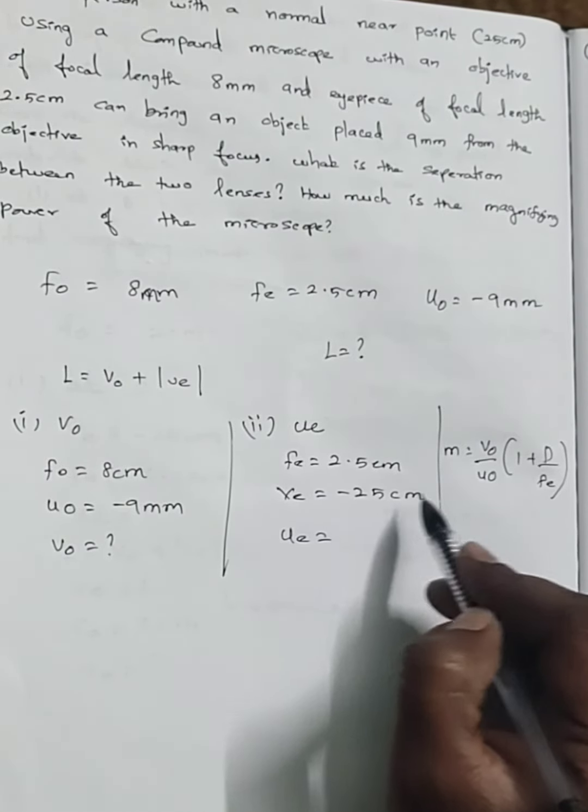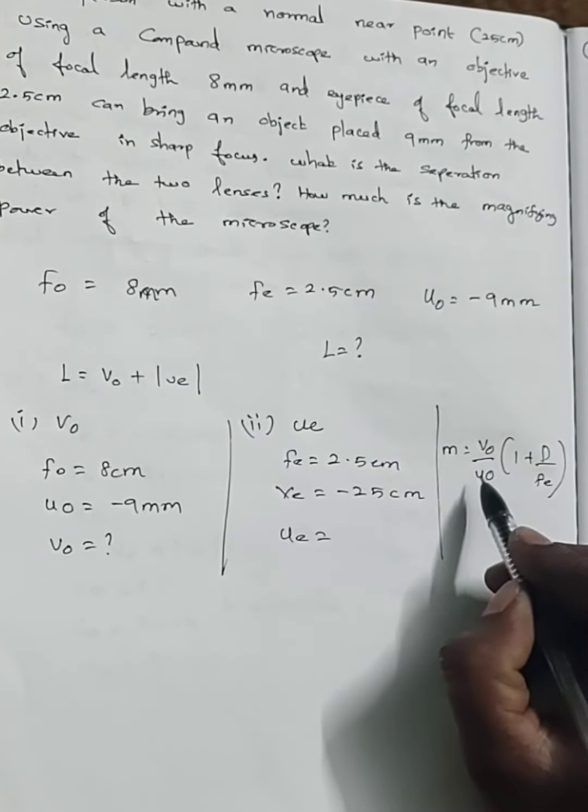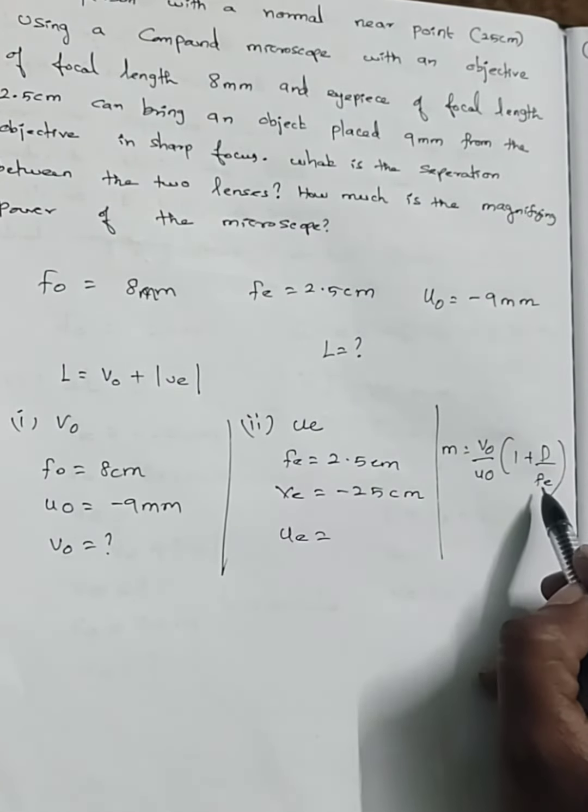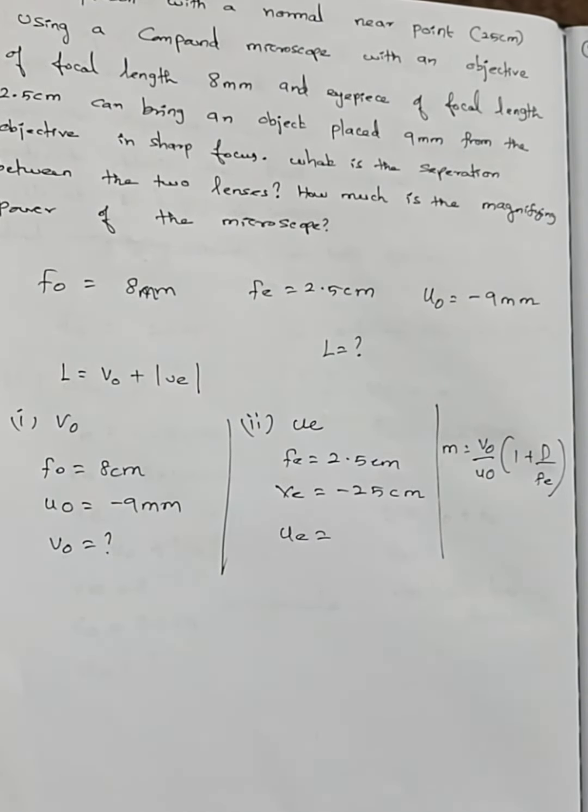So VE means minus 25. Whenever you substitute VE put it as minus 25. Whenever you substitute D put it as just 25. Then finding the magnifying power, it is V0 by U0 into 1 plus D by FE. Substitute it and get it guys. For answers see the description later I will update it.